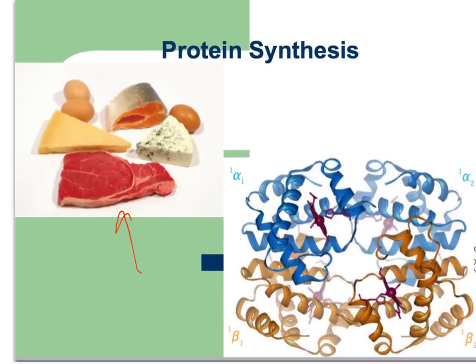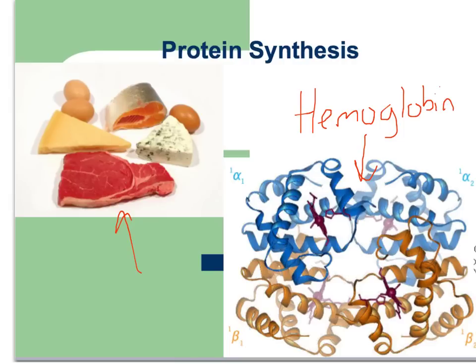We're going to be talking about it in terms of the molecular level — what does it look like as a molecule? This is hemoglobin. This is the molecule that carries oxygen in red blood cells, but it's a type of protein. There are many, many different functions of proteins, and we'll be talking about a few of them, but today we're going to be focusing on how to make them.